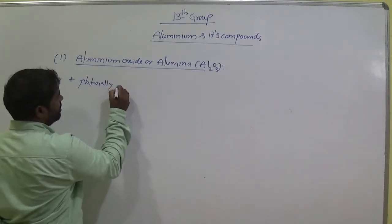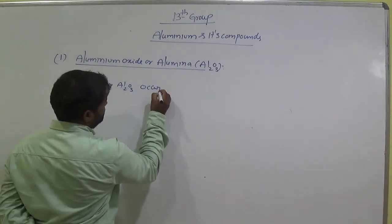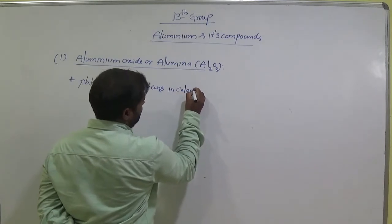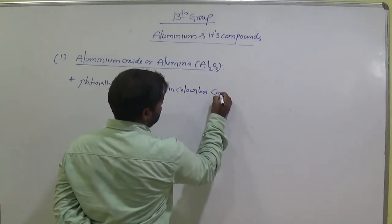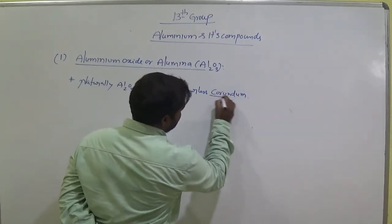Naturally, Al₂O₃ occurs in colorless corundum. Corundum means colorless corundum.